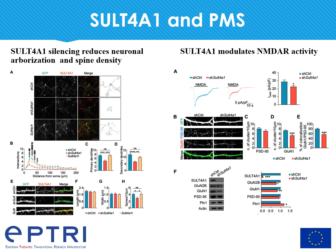To study the role of SULT4A1 in neuronal development and function, we designed a specific shRNA, and found that in SULT4A1 knockdown neurons there was a significant reduction in neuronal arborization and spine density. To better clarify the role of SULT4A1 at the molecular level, we analyzed the expression of a panel of synaptic proteins, and found a significant decrease in NMDA receptor expression. This was confirmed by immunofluorescence, which showed a significant decrease in GluN1 clusters in SULT4A1 knockdown neurons compared with wild-type neurons.